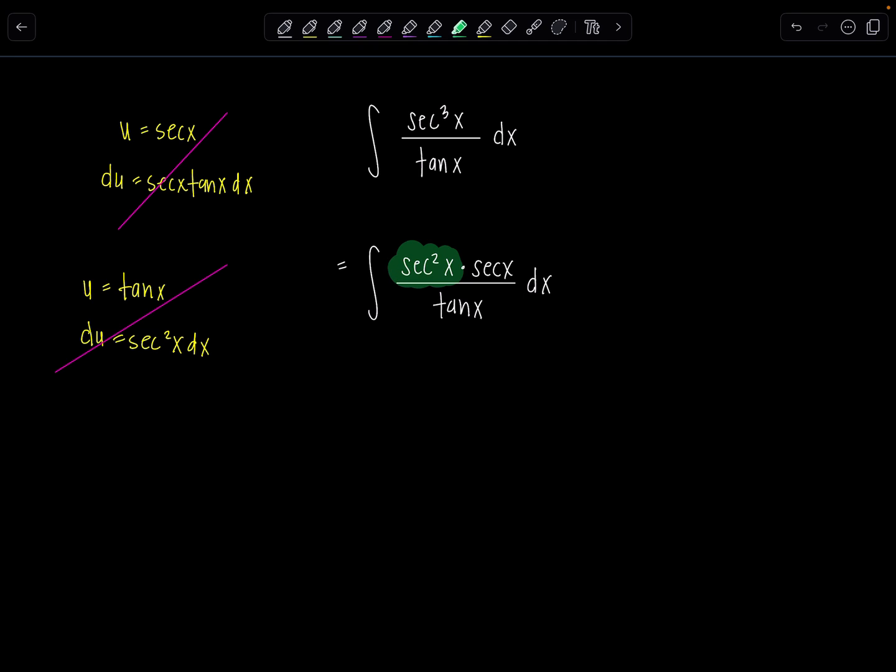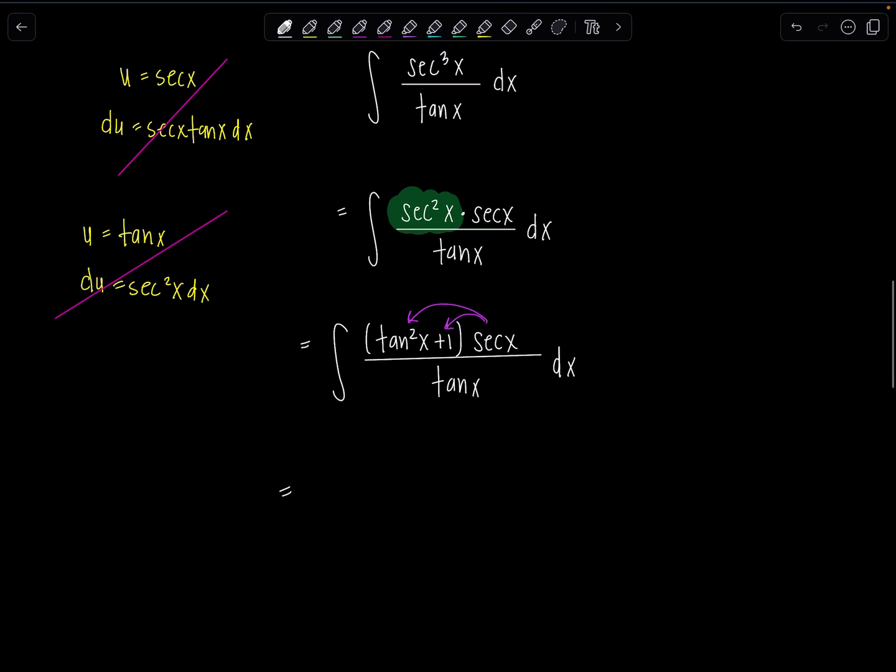And then I use my Pythagorean identity to replace secant squared x with, do you remember? Very good. Tan squared x plus one times secant x over tangent x dx. And I thought maybe this is just going to give me a little more play. So now we can distribute secant x through the numerator.